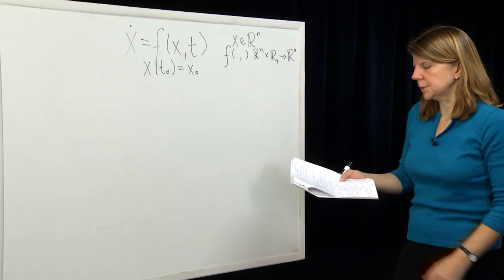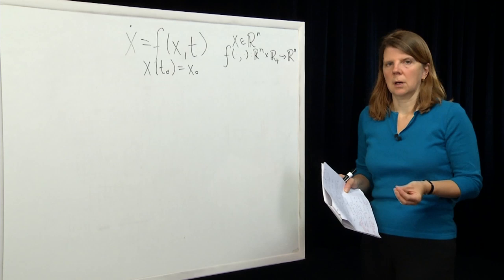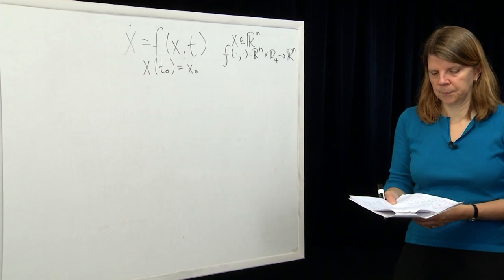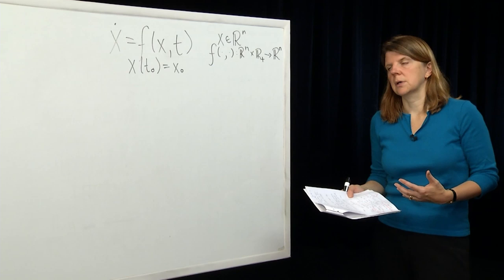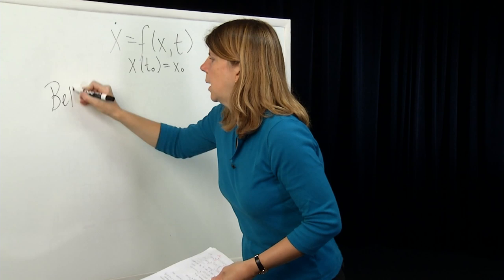I'd like to spend a few minutes talking about the machinery. We didn't prove this last time and we're not going to prove it fully, but we are discussing some of the machinery used in the proof. We talked quite a bit about Lipschitz continuity and how you might prove that a function is Lipschitz continuous by using a norm of the Jacobian of F. Today we're going to talk about part of the machinery used to prove uniqueness of the solutions to that differential equation — and that machinery is called the Bellman-Gronwall Lemma.